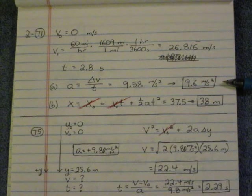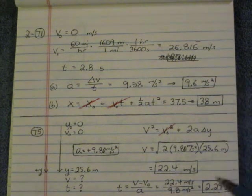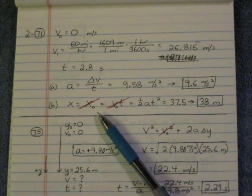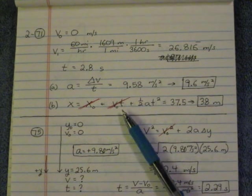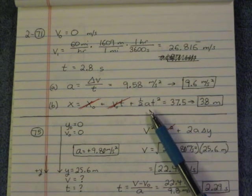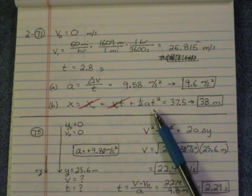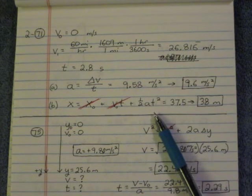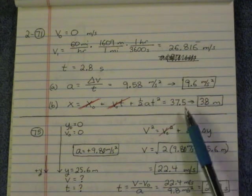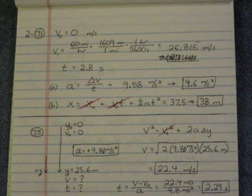Part B, asking how far does it go, let's use this kinematic equation. X equals X naught, which went to 0, plus V naught t. Well, since V naught is 0, that goes to 0. Plus, the only part that's remaining is 1 half AT squared. We solve for A in part A. T is 2.8 seconds. So when we plug in those numbers, we get 38 meters.